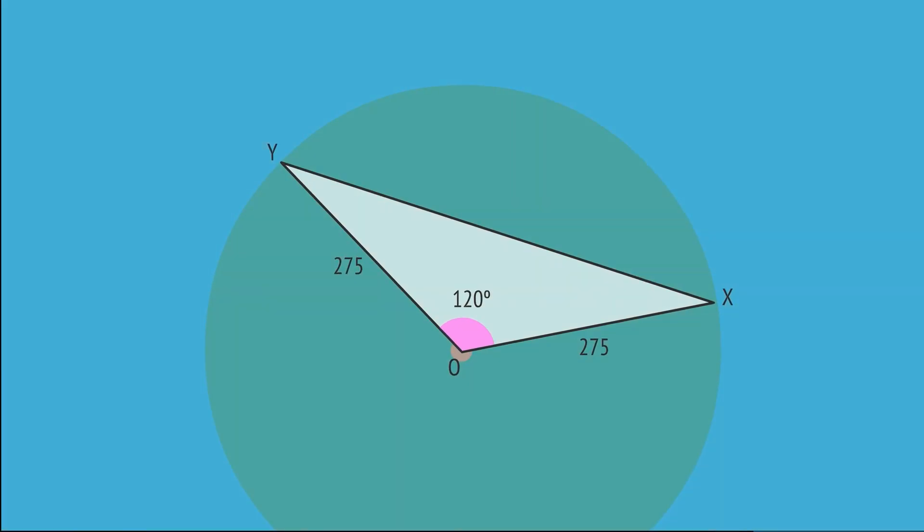And by the symmetry of an isosceles triangle, if we split this angle in half, we'll bisect the distance XY at the midpoint M, forming two right-angle triangles. With this right-angle triangle, we can use a trig ratio to calculate the length MX.